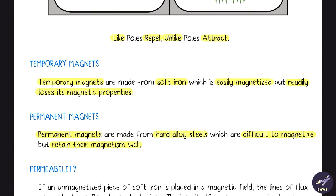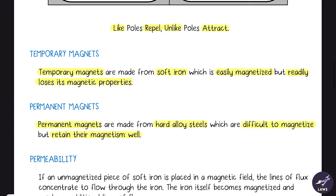Temporary magnets are made from soft iron, which can be easily magnetized but readily loses its magnetic properties. Permanent magnets are made from hard alloy steels, which are difficult to magnetize but retain their magnetism well.